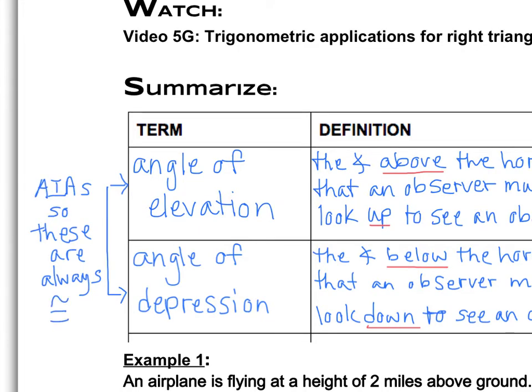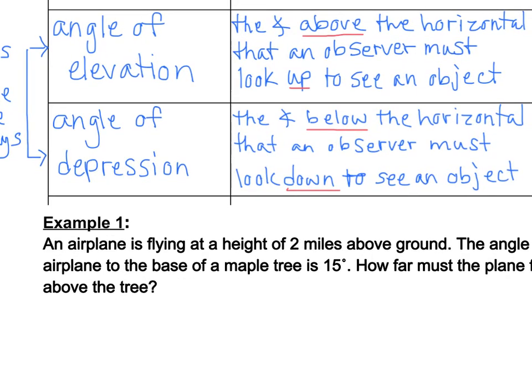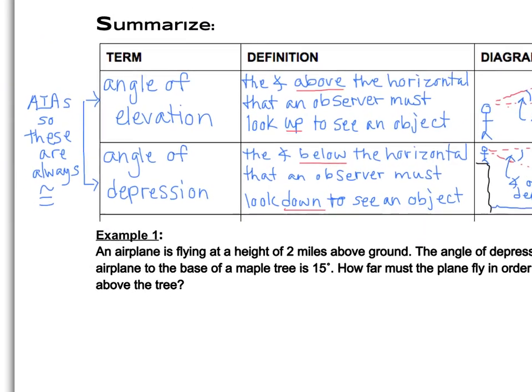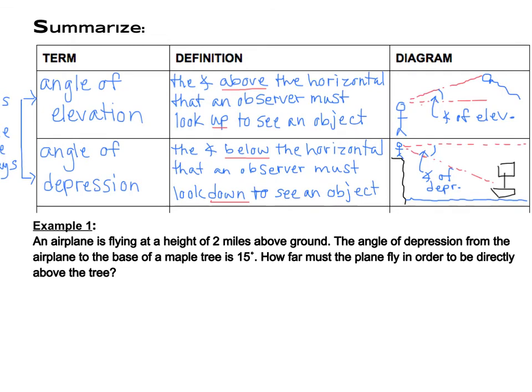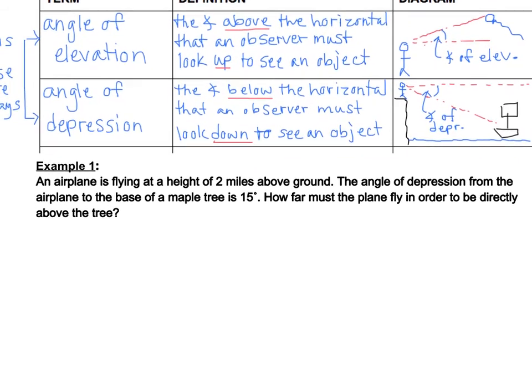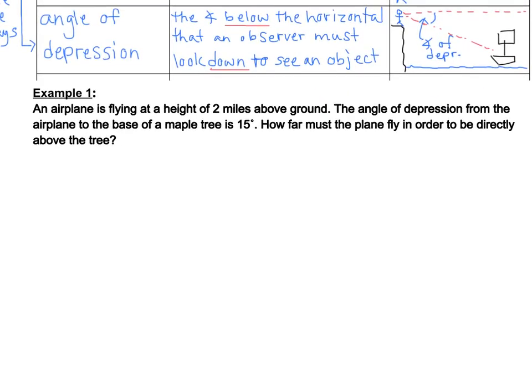Okay, so then we're going to go on to example one, as we're looking at a word problem that applies to our trig functions here. In the example one that is given to you is, an airplane is flying at a height of two miles above ground. The angle of depression from the airplane to the base of a maple tree is 15 degrees. How far must the plane fly in order to be directly above the tree? So I think as we start making this, we'll leave angle of depression there at the top of the screen so we can see what kind of picture we're going to need. Whenever you have an application problem, you always want to start by sketching a diagram.